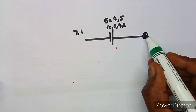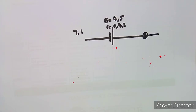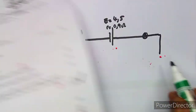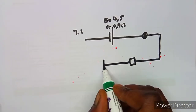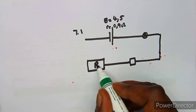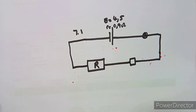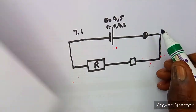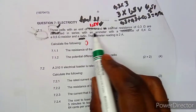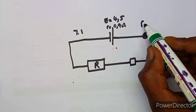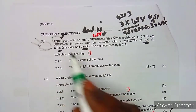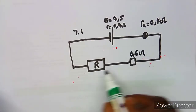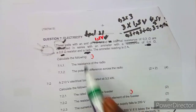The battery is now connected to the series components: an ammeter, a normal resistor, and a radio. The ammeter has a resistance of 0.4 ohms, the normal resistor is 0.6 ohms, and we do not know the resistance of the radio.